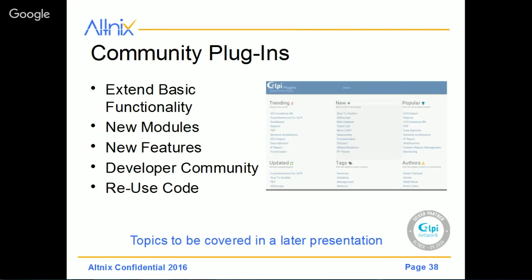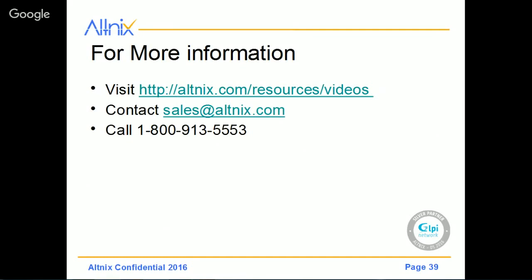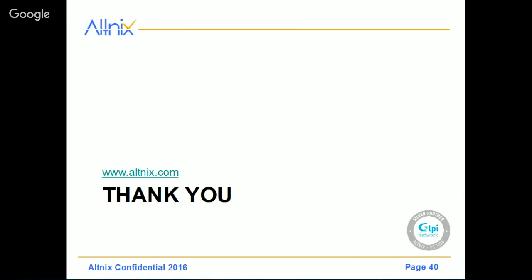There's also another way of extending the functionality of GLPI, and that is using plugins. Earlier, we talked about how there is a wider developer community for GLPI. Using GLPI, you can extend the functionality by downloading modules made available by other GLPI users through the plugin website. It's a very powerful and easy way of borrowing somebody else's code through the open-source framework. This brings us to the end of this presentation, which is an overview and part one of the training programs. For more information, please visit our website and look under the video section. You can contact sales@altnix.com or call us at 1-800-913-5553. Thank you for watching this video, and we appreciate your time.